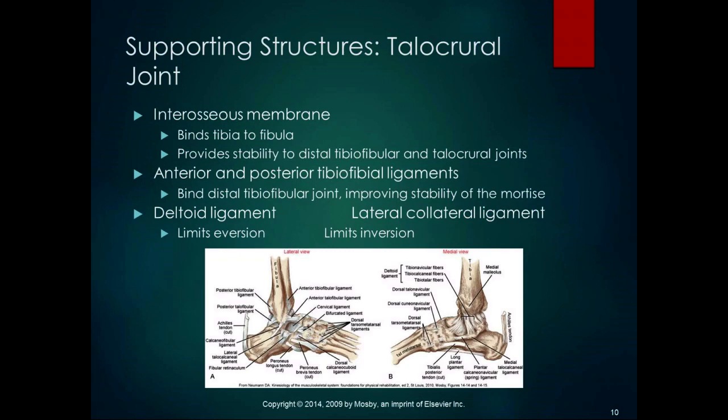The deltoid ligament limits eversion — it's on slack in neutral or inverted and on stretch when everted, indicating it's on the medial side of the foot. The lateral collateral ligament limits eversion as well and is on the lateral side of the foot. The deltoid ligament works really hard to stabilize your ankle.